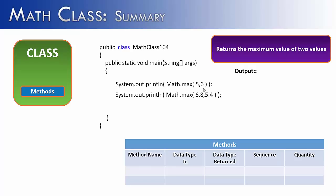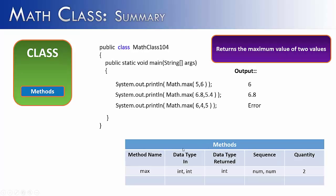The next method is max, which returns the maximum of two values. Given 5 and 6, it returns 6. The name is max, data type in is integer and integer, return type is integer. Sequence — a number and a number — doesn't matter here, unlike Math.pow. Quantity is 2. If you try to add a third value, it causes an error. You cannot increase the quantity of a method just because you want to find the maximum of three values instead of two. Methods only work the way the designer wrote them.